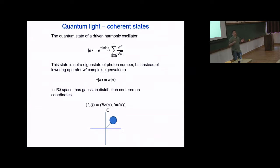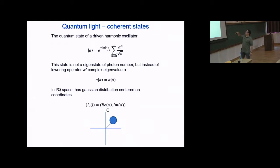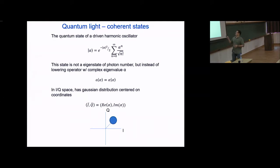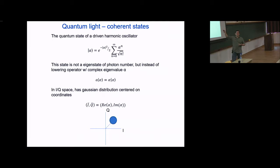In terms of the Fock state basis, the coherent state described by complex coefficient α is e^(−|α|²/2) as a prefactor, then a sum over all possible Fock states — with a missing n corrected here. A coherent state is a summation over all Fock states, and has this weird property that it's not an eigenstate of the number operator; in general it has every number population. Instead it is an eigenstate of the lowering operator: the coherent state is the state where when you pull a photon out of it, nothing happens — you just get back this complex coefficient α as your prefactor.